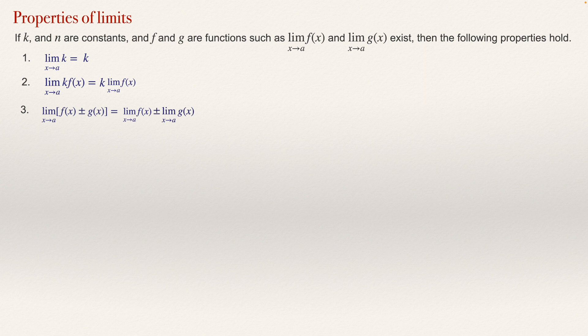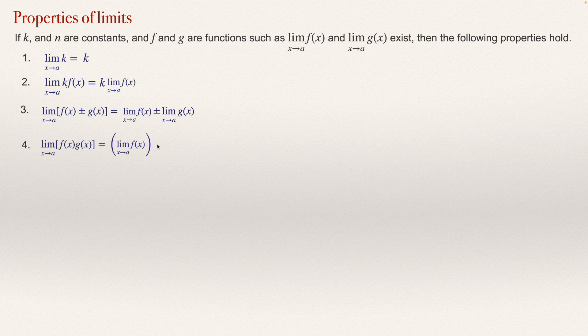Something similar holds for a product of two functions. As a fourth property, if we have the limit of a product of two functions as x approaches a, we compute the limit of the first function and multiply by the limit of the second function. It is a similar property to the previous one, but now with multiplication.